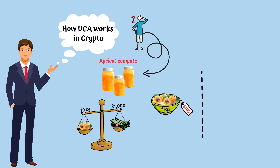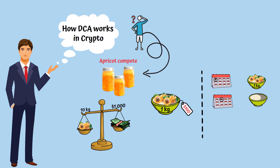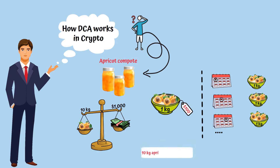Or you could buy them in retail. At the beginning of every month, you buy a pound of apricots, but prices vary, meaning sometimes 1 pound is worth $110, other times it is worth $90. In the end, using the lump sum version, you would have gotten 10 pounds of apricots for $1,000.